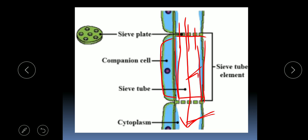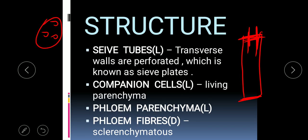The companion cell is actually a type of phloem parenchyma. As the name suggests, it provides company to the sieve tube elements for their function, and it has rich cytoplasm distributed throughout the cell. Phloem parenchyma has large vacuoles which store food and water, providing support to the rest of the phloem cells.